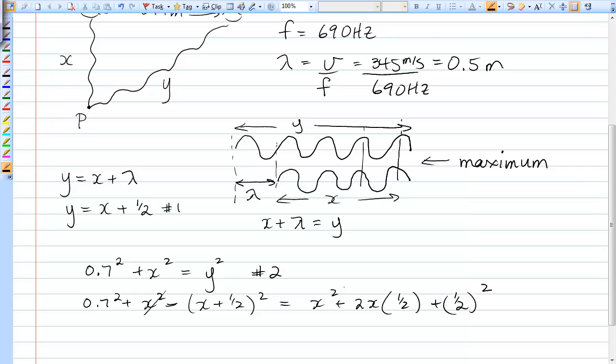The X squared cancel. And I have 0.7 squared is equal to 2X times 1 half, which is X plus 1 half squared.